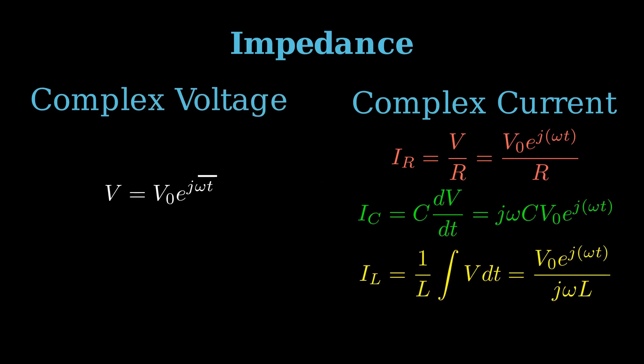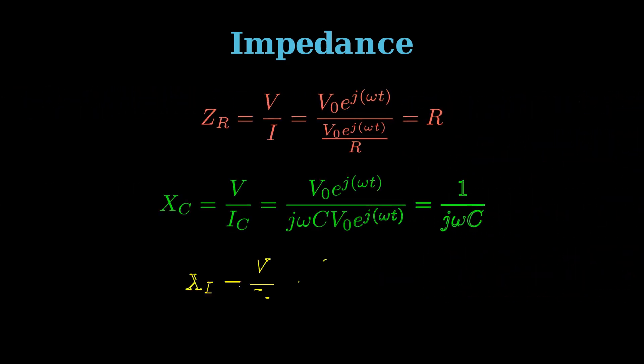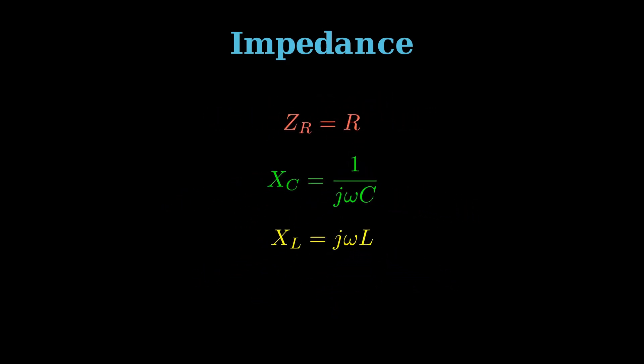Taking our complex expressions for voltage as well as current, we can come up with a value called impedance, often written as Z. The X in our other expressions stands for capacitive reactance and inductive reactance, but they can be treated as impedances when solving an AC circuit.